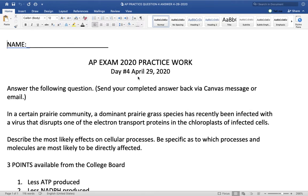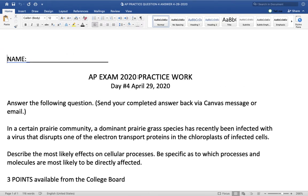Let's go to review question number four, which involved photosynthesis. In a certain prairie community, a dominant prairie grass species has recently been infected with a virus that disrupts one of the electron transport proteins in the chloroplast of infected cells. So, describe the most likely effects on cellular processes. Be specific as to which processes and molecules are most likely to be directly affected.